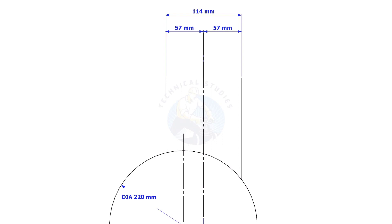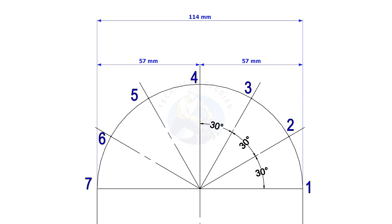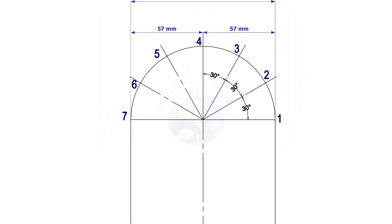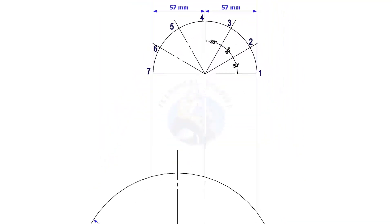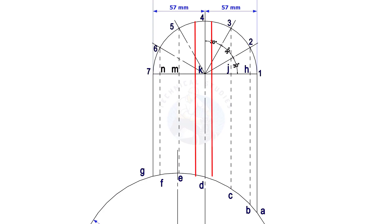Draw a half circle of radius half OD of the branch. Divide this half circle into 6 equal segments. If the pipes are above 6 inches, you may need to increase the segments for better accuracy. Draw perpendicular lines from the intersection points to the header, as shown. These lines must be parallel to the branch center line.